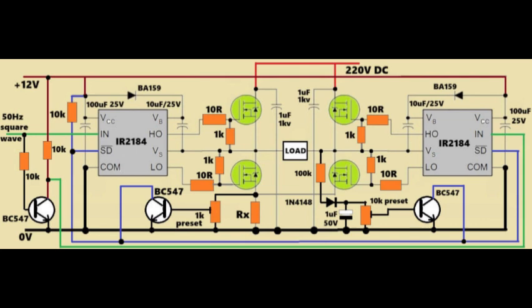This section is doing overvoltage sensing or maybe output waveform shaping. When output goes higher than expected, then voltage reaches the preset section. This bias turns on the relevant BC547 transistor, which then pulls the SD pin of the IR2184 low, stopping one driver and balancing the output.